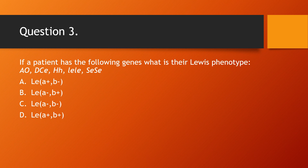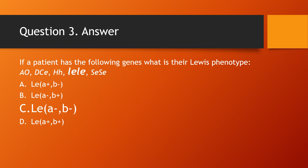Question 3: If a patient has the following genes — AO, D, capital C, lowercase e, capital H, lowercase h, lowercase le, lowercase le, capital SE, capital SE — what is their Lewis phenotype? The answer is C, Lewis A negative B negative. The person does not have the capital LE gene, and it does not matter if they have the capital SE gene. If a person is homozygous lowercase le, the answer is always Lewis A negative B negative — do not look at the secretor gene at all.